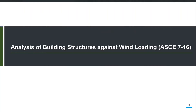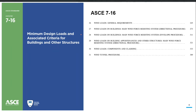ASCE 7-16 prescribes the minimum design loads and associated criteria for buildings and other structures. It prescribes all the loads and procedures to determine lateral loads such as seismic loads and wind loads, as well as guidelines about live loads and other types of loads like flood load, tsunami load, and snow load. All kinds of loads are covered in this particular document.